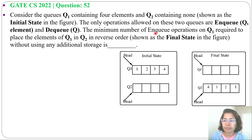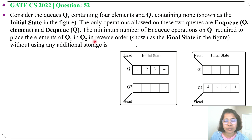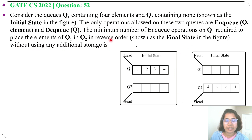The minimum number of NQ operations on Q1 required to place the elements of Q1 in Q2 in reverse order, shown as the final state in the figure, without using any additional storage is what we need to find. First step: